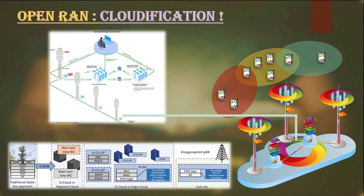Residential areas may take more traffic during off-working hours. In case of any public event, the sites near that event will carry more traffic during the event compared to other times. So in all such conditions, cloudification and cloud-native networks can automatically reshuffle the resources between the connected cells and sites.